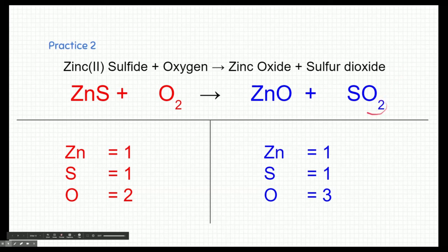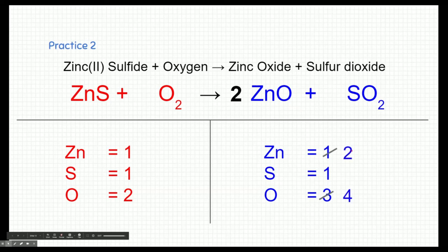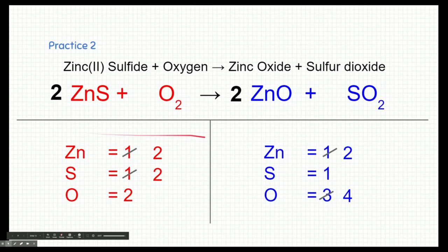I'm not going to touch any of the subscripts — not this two, this two — but I can add coefficients to the front. I don't like the fact that oxygen on the right is three, an odd number, so I'm going to multiply that compound by two. That changes both my zinc and my oxygen, so I add a coefficient in front of ZnO to get two zincs and four oxygens on the right. To fix my zincs on the left, I add a coefficient in front of ZnS. That changes my zincs but also changes my sulfur. Going back to the product side, I multiply SO2 by two — that changes the sulfurs, but it also changes the oxygens: two times two is four, plus two more from ZnO gives six total oxygens.